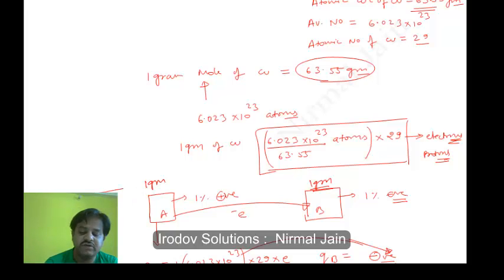We know the atomic weight of copper is 63.55 grams and the Avogadro number is 6.023 into 10 to the power 23, and atomic number of copper is 29. So using this data, one gram mole of copper will be weighing 63.55 grams.